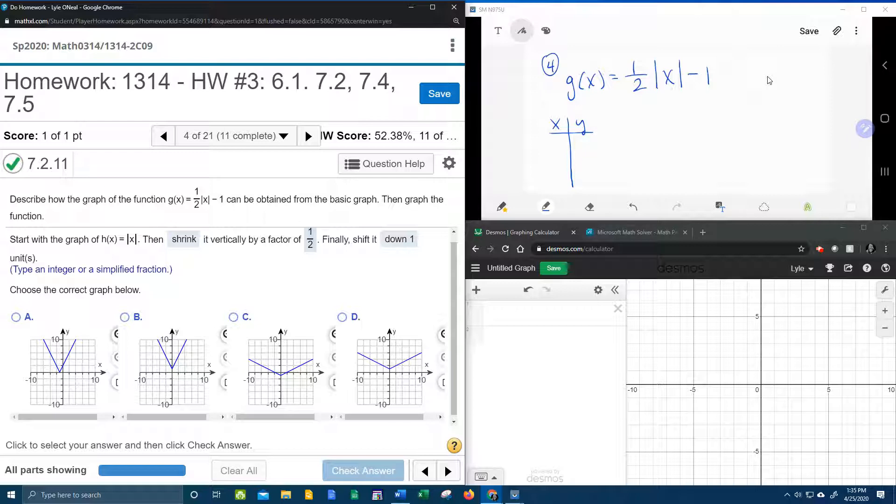So we're going to start with a table of values. In this case, I'm going to start with zero. You can pick anything you want, really, but zero is pretty easy to work with here. And we're going to plug that in. So we're going to have 1/2 times the absolute value of 0 - 1.